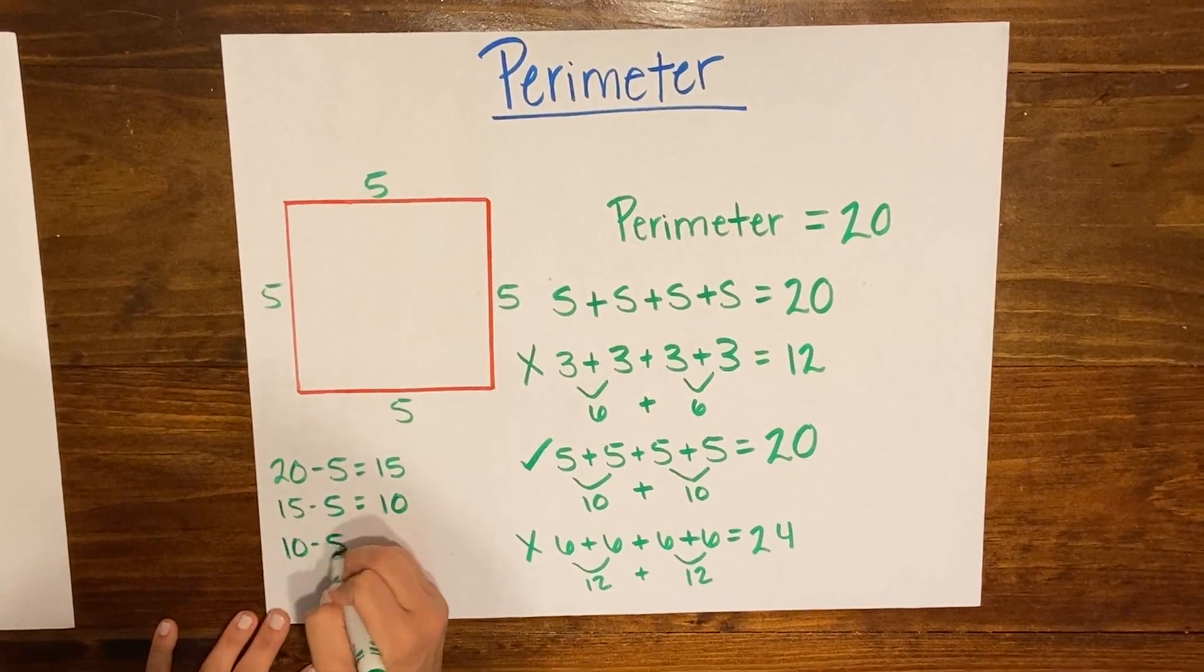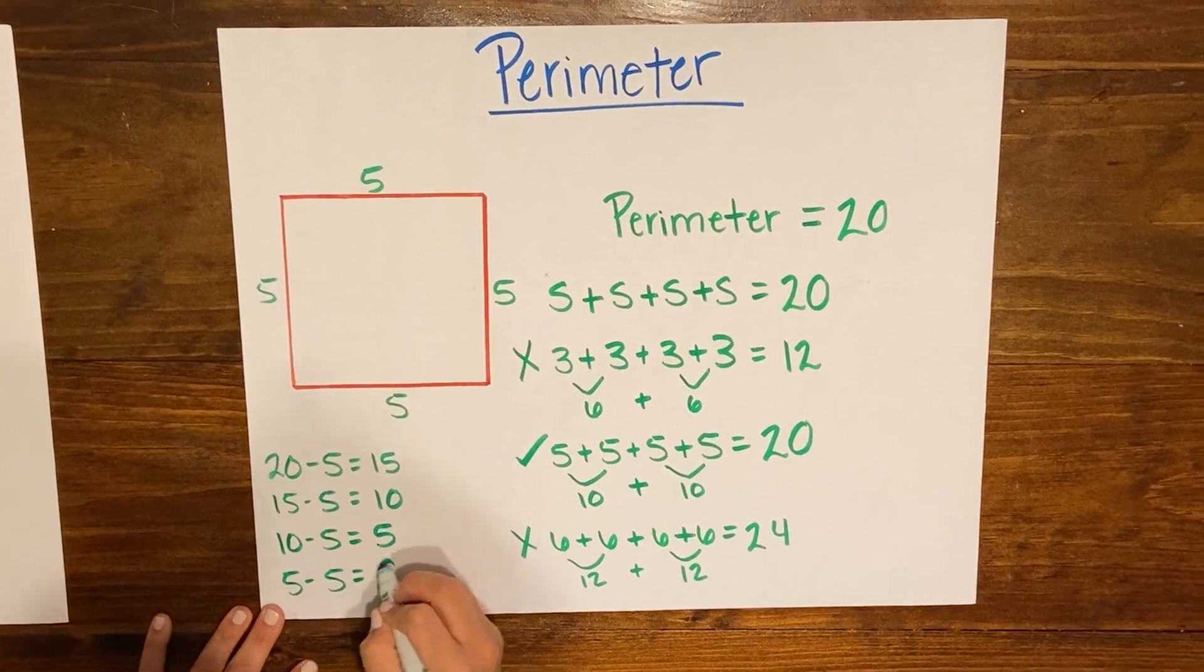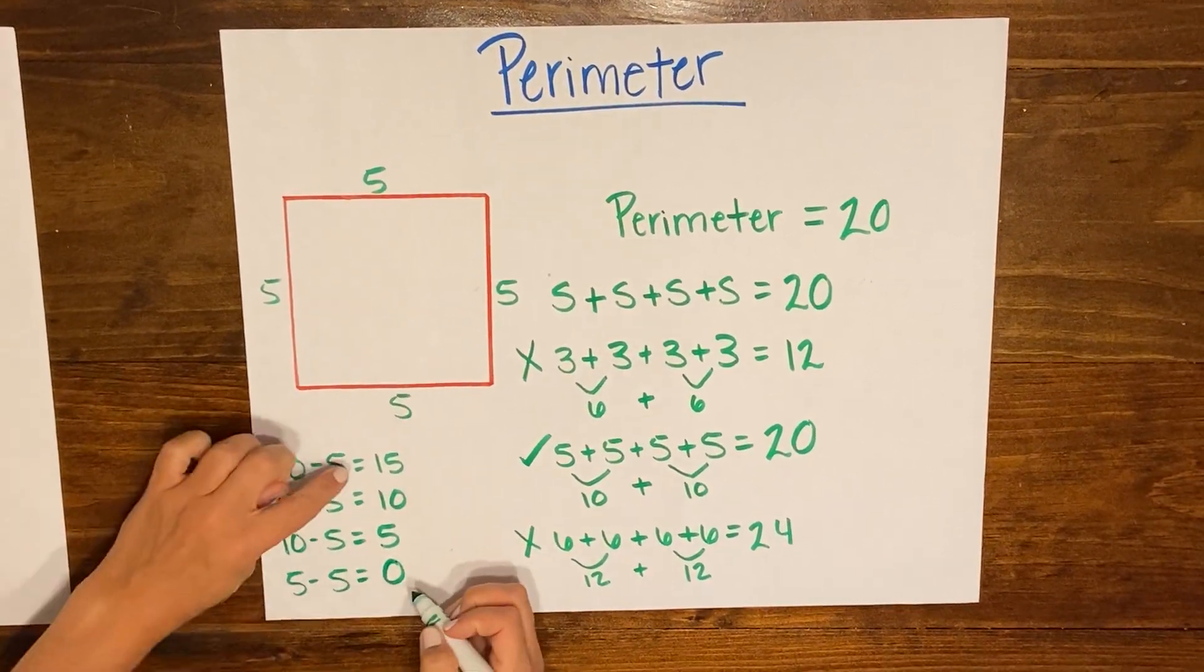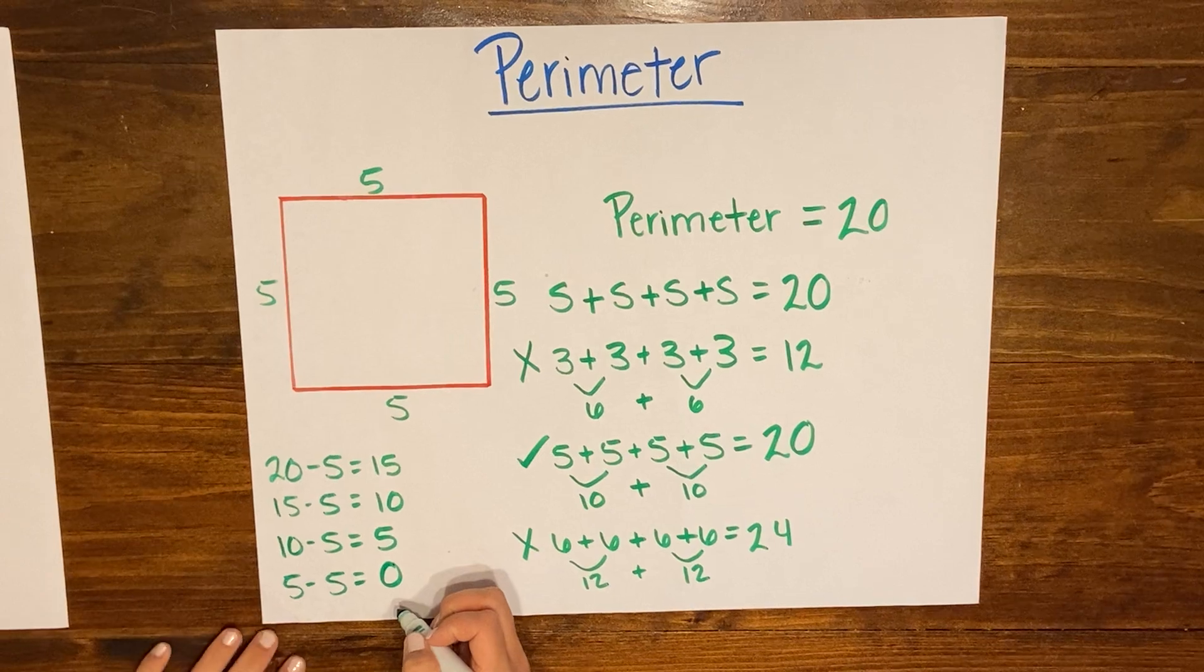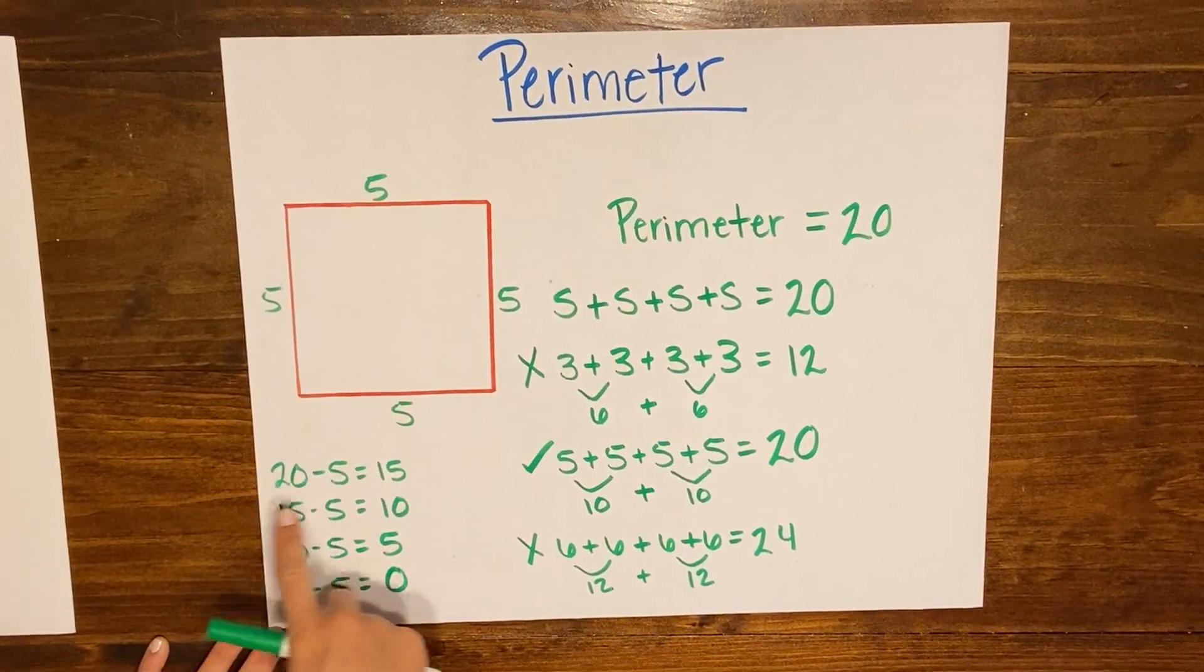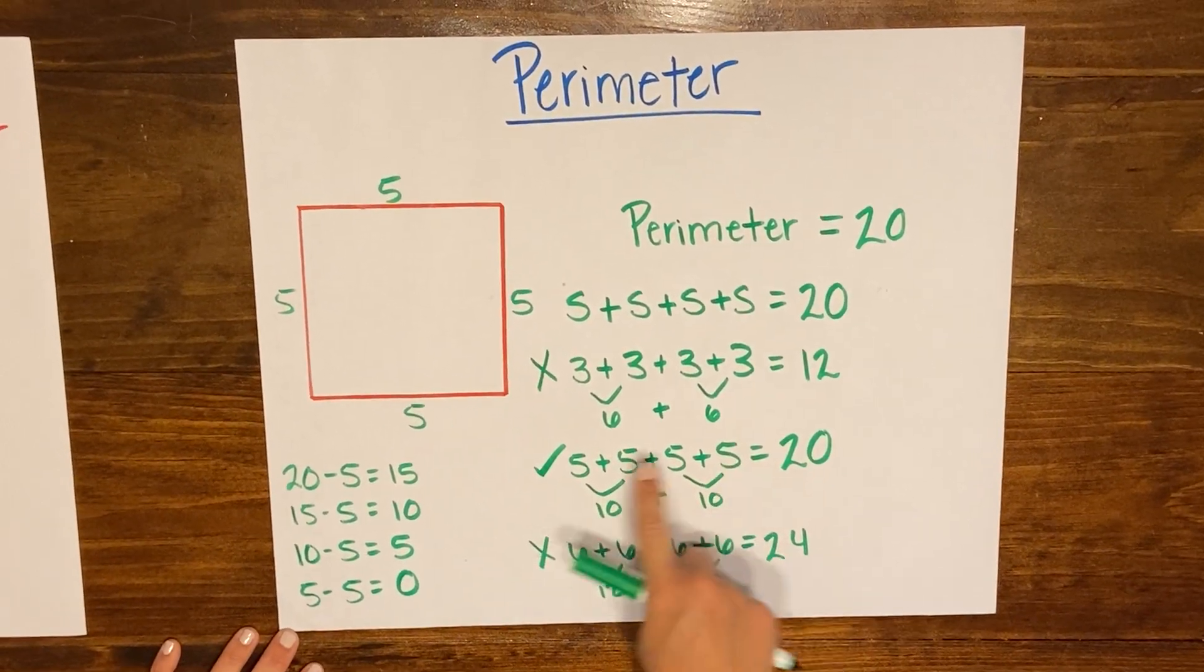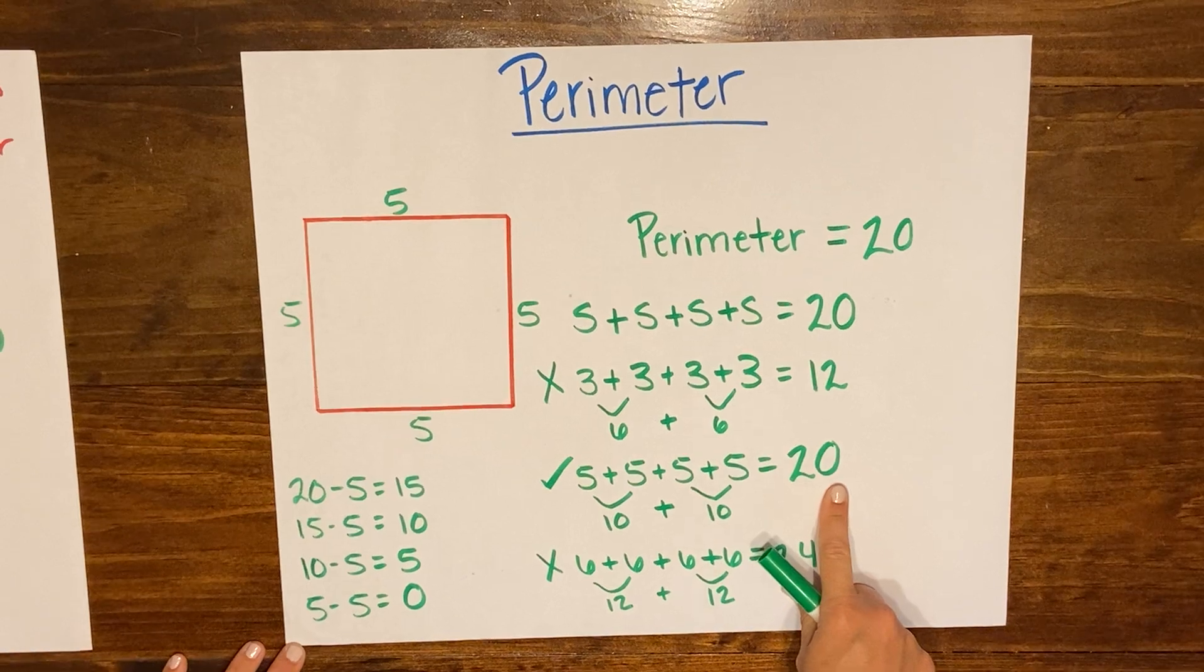10 subtract 5 is gonna give me 5, and then 5 minus 5 is gonna give me 0 which is what I want if I've created four equal sides. So that's just kind of a connection to repeated subtraction and I'm just showing you that if we are taking this number and making four equal sides with 5 it is going to give us 20.